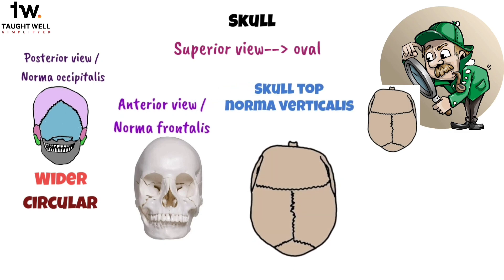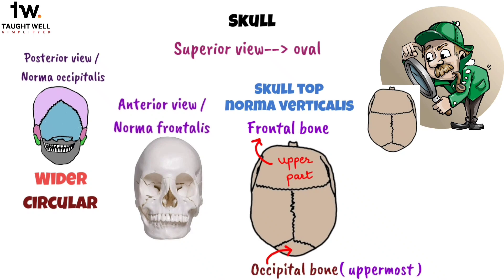We can see the upper part of the frontal bone at the front, which is anteriorly, the uppermost part of the occipital bone at the back, which is posteriorly, and a parietal bone on each side.